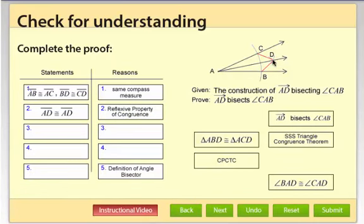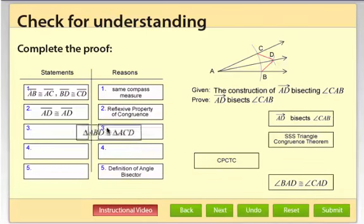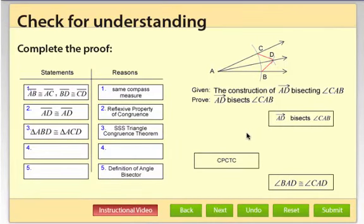Now, we actually have three pairs of corresponding sides congruent. So we can say the two triangles are congruent using side-side-side congruence theorem. So triangle ABD congruent to triangle ACD. And the reason is side-side-side triangle congruence theorem.